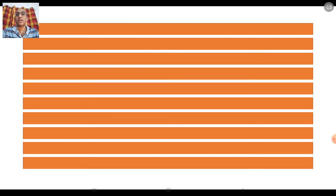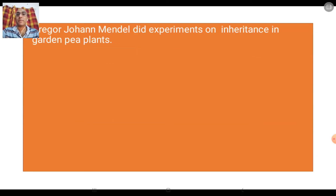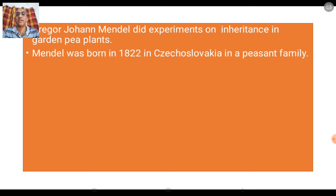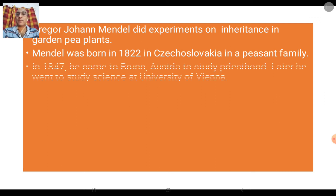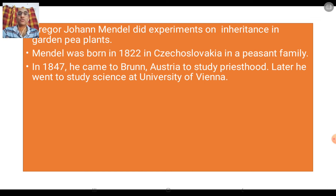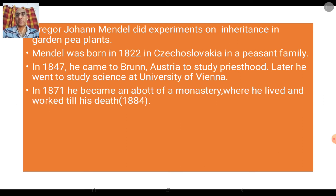Gregor Johann Mendel did experiments on inheritance in garden pea plants. He was born in 1822 in a peasant family in Czechoslovakia. In 1847 he came to Brno in Austria to study priesthood, and later he went to study science at the University of Vienna.